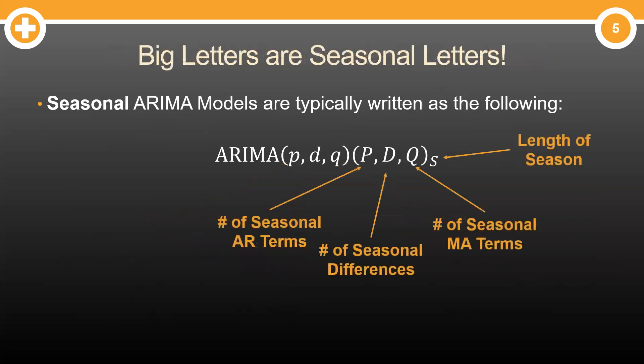However, we now have the seasonal components to the model as well. Big P represents the number of seasonal AR terms. Big D is the number of seasonal differences. Big Q is the number of seasonal moving average terms. How big is this season? In other words, how many data points are in each season? That is what S tells us.